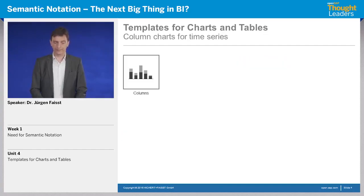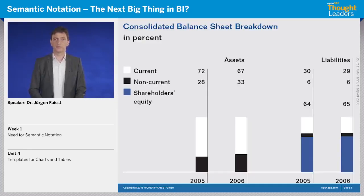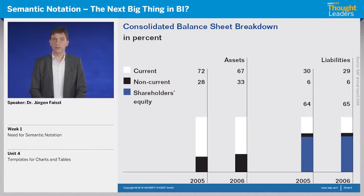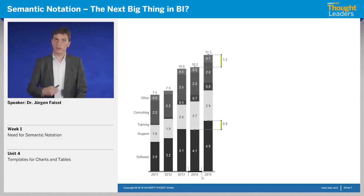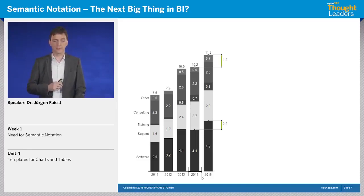Let's start with column charts. If we look at a typical column chart — for instance this one from SAP in 2006 — it's just a layout how a designer decided this chart should look. If we applied the rules from the previous units, we would probably have a layout like this, with a title in the upper left corner on every chart and table: a three-row title with a unit, a measure, and a timeframe. And you can see the axis from left to right with semantic notation for actual and previous year, and highlighting for the increase.